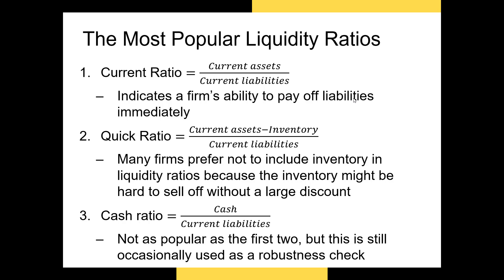The quick ratio, sometimes known as the acid test ratio, is current assets minus inventory divided by current liabilities. The reason we have the quick ratio in addition to the current ratio is because many firms don't like to include inventory in liquidity ratios, since that inventory might be hard to sell without a large discount — in other words, it's the least liquid of the current assets. For example, if Ford has a large inventory of vehicles, it may not want to include those vehicles in a liquidity ratio because it might be hard to sell them quickly at full market value. Finally, the cash ratio is simply cash divided by current liabilities.